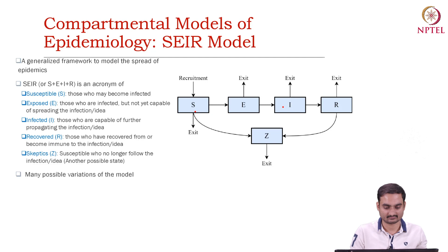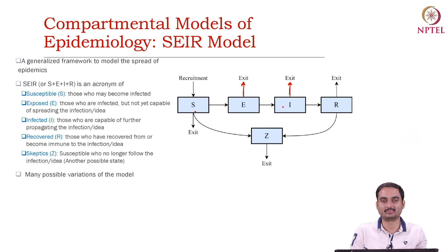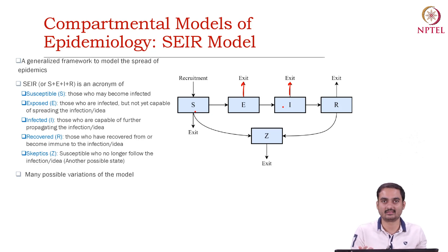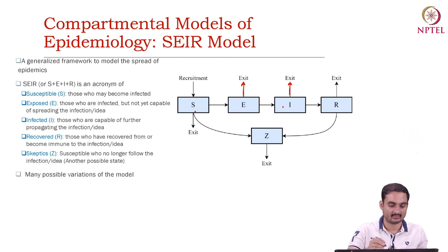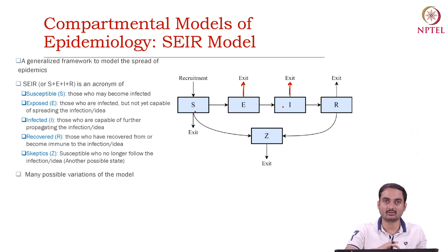With every state there is an exit symbol, which basically indicates that at every state there is some chance that the user will die and that user will be removed from the system. Now it is not the case that for all the models we will follow all these five states. We can take a subset of the states and then define our own model.